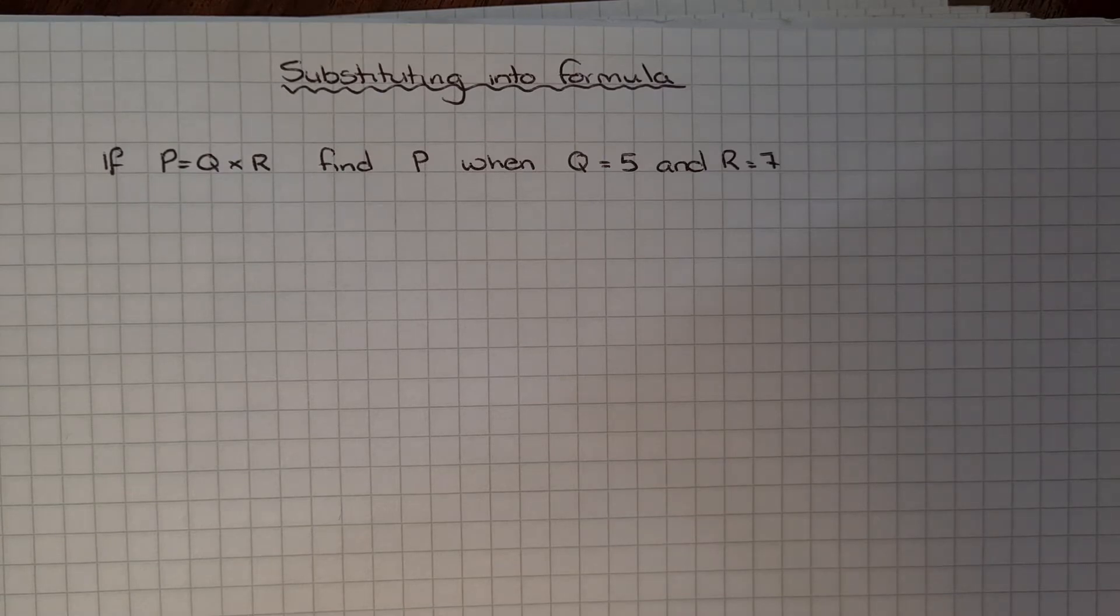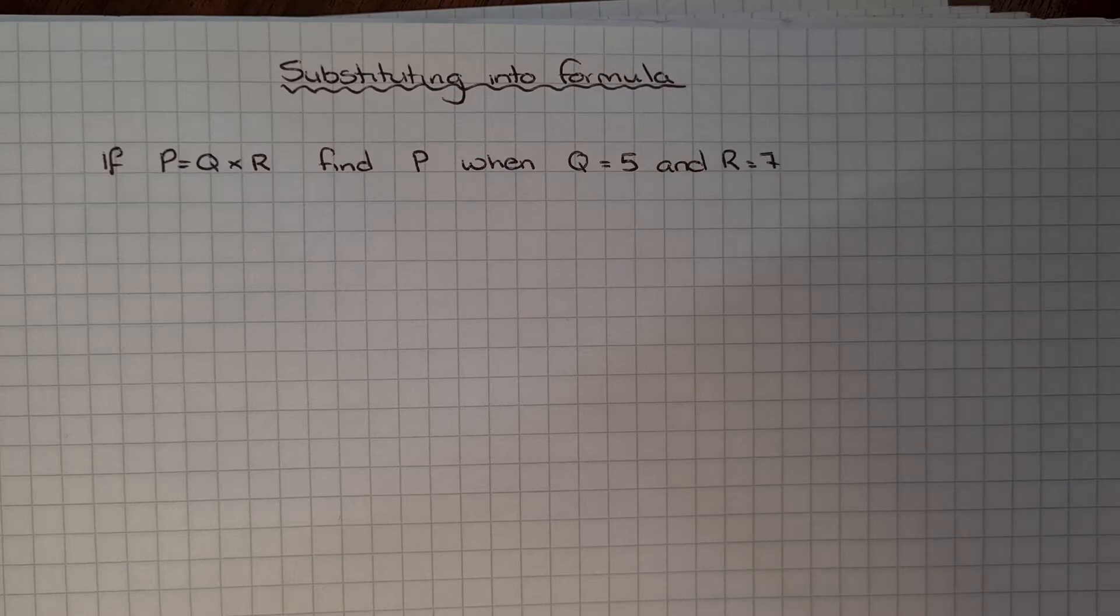If P equals Q times R, so that's our formula, find P when Q equals 5 and R equals 7. With these, it's the same steps as before. We're going to replace the letters with the relevant numbers and calculate the answer.